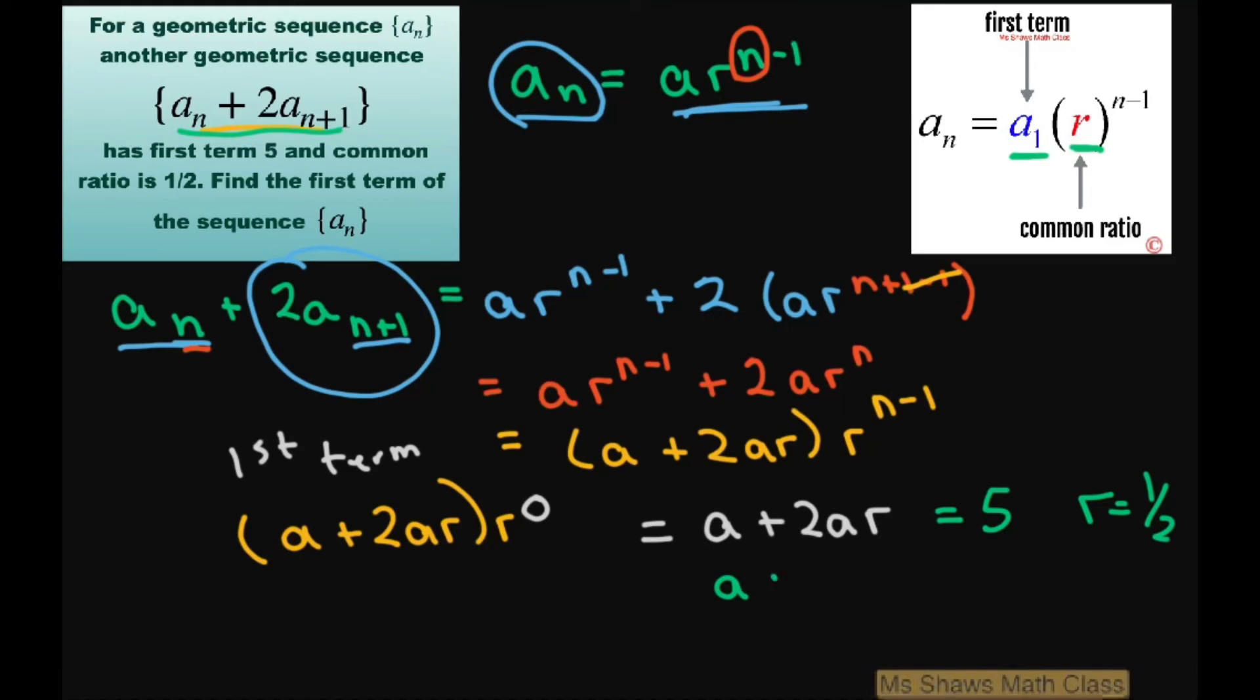you're going to get a plus 2a times 1/2. Now this is going to give you a plus a equals 5. So 2a equals 5, so a is 5/2.